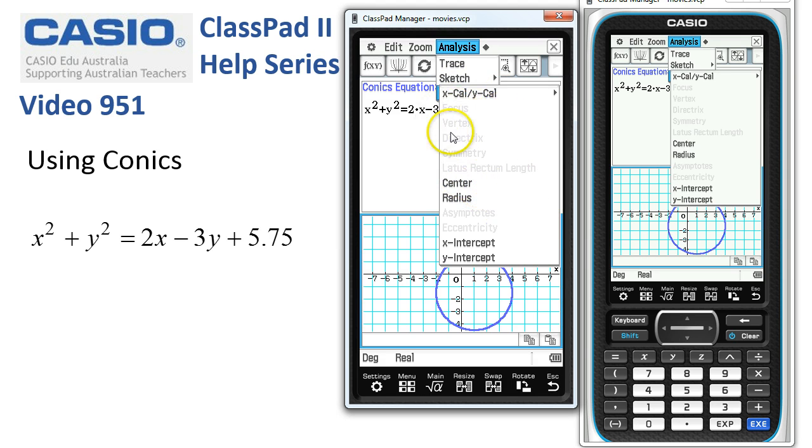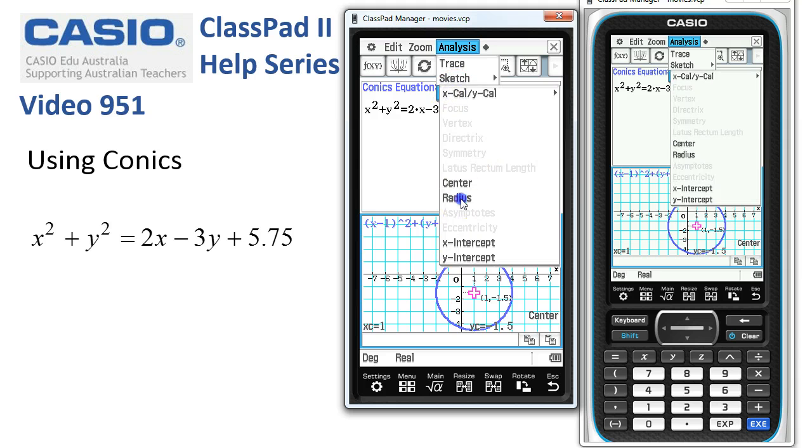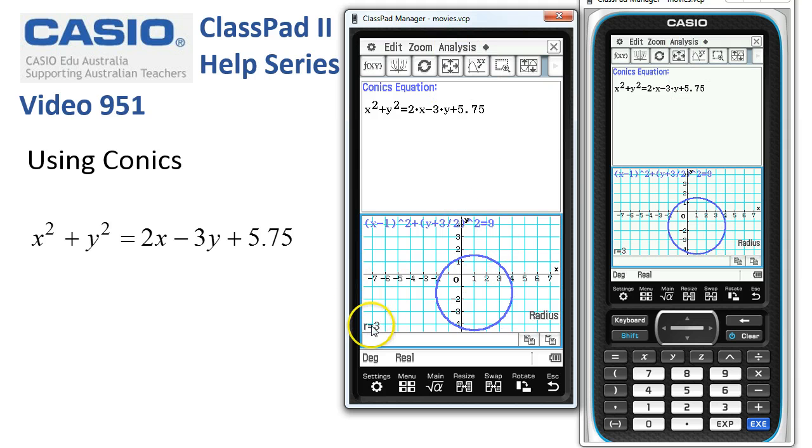A lot of options are grayed out here, but for a circle, the center is displayed with the coordinates and the radius is also given. The radius is three of this circle. So it's a pretty easy way to analyze this circle.